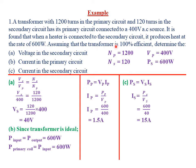Assuming that the transformer is 100% efficient, determine: part A, the voltage in the secondary coil; the current in the primary coil; and the current in the secondary coil.